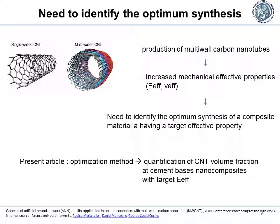During the last years, the production of multi-wall carbon nanotubes and graphene enabled the reinforcement of composite materials at the nanoscale. To this end, a methodology to identify the optimum material synthesis needs to be effectively addressed. The present article presents an optimization method to quantify the appropriate volume fraction of graphene nanostructures in cement-based nanocomposites with a target value of the effective modulus.